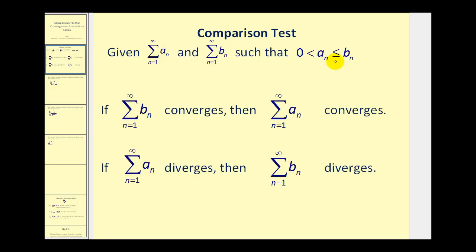To make sense of this, let's consider the case where a sub n is smaller than b sub n. This is just telling us that if the larger series converges, then so does the smaller series. And if the smaller series diverges, then so does the larger series. If we think of it in this way, I think it's easier to remember.